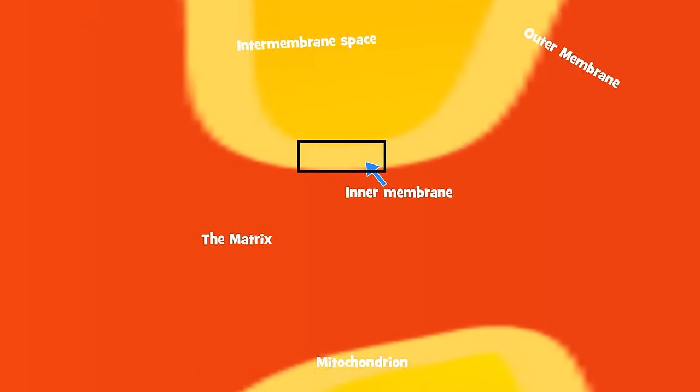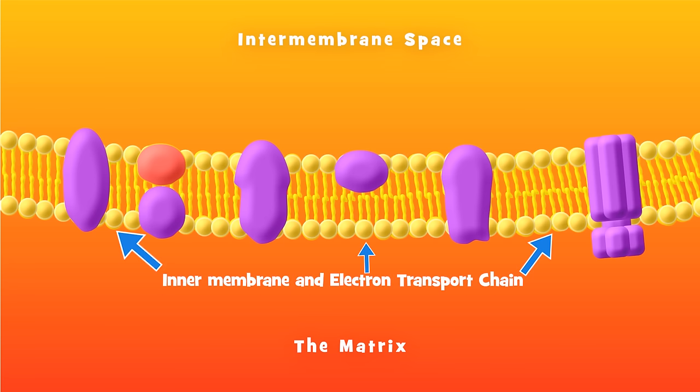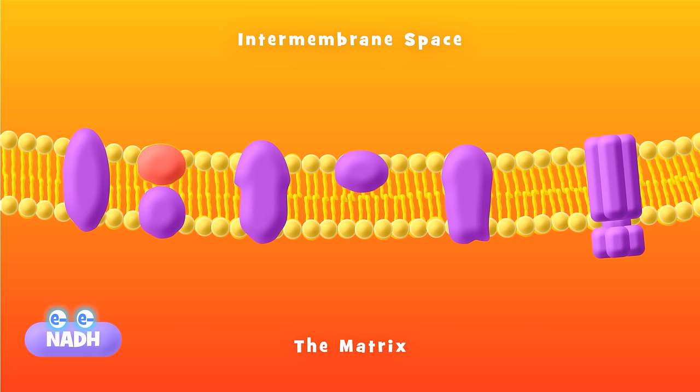Let's zoom in on this inner membrane to see the electron transport chain in more detail. Here's how it works. NADH, that electron carrier we've been making all along, delivers its electrons to the first protein in the electron transport chain.